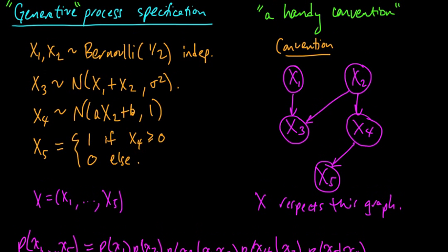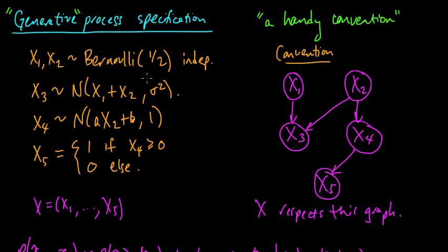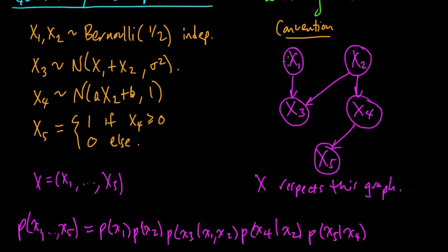I just wanted to tell you what this means if you hear it, and also because this is a really nice way to think about a probability distribution. If you have a distribution and a graphical model like this, you could give it a generative process specification this way - specify x1 and x2, then x3 depends on those, and so on and so forth. It's a very nice way to intuitively envision or visualize the joint distribution.